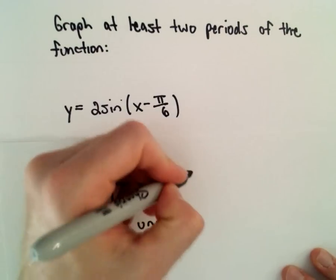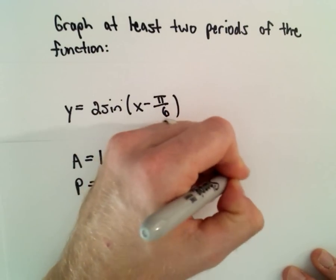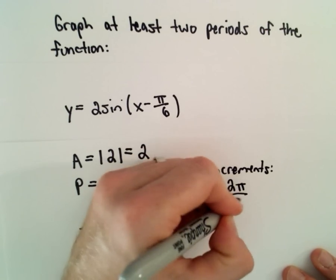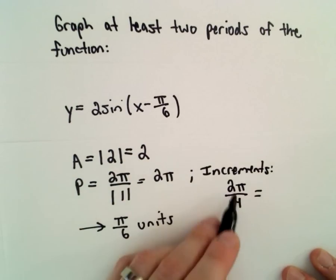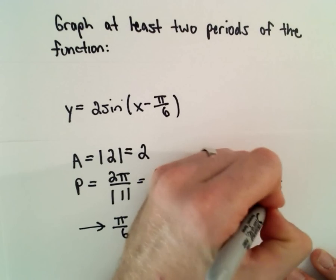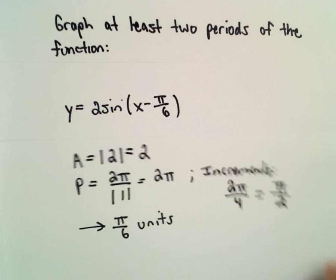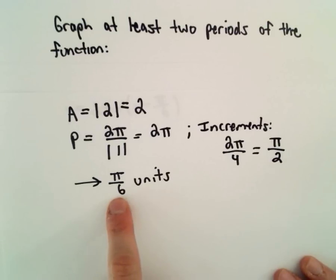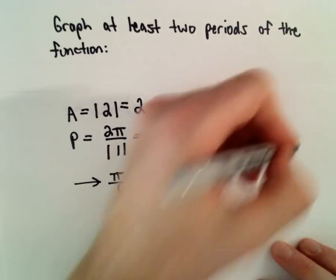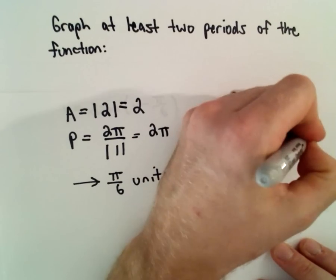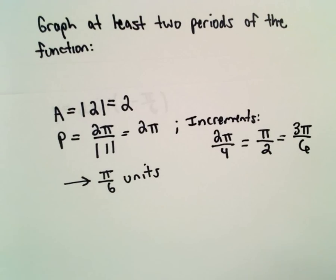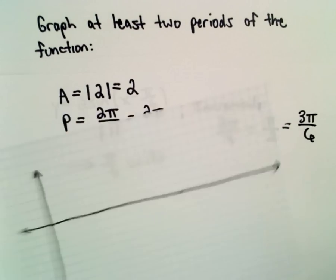To get my increments, I use the period and I take the period and divide that into 4. So 2 pi over 4, that's going to be pi over 2. However, since we're initially starting it at pi over 6 units, I'm going to rewrite that with a denominator of 6. And I'm going to write that as 3 pi over 6.